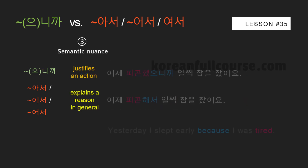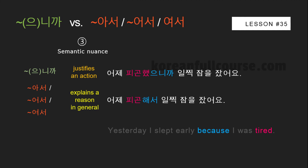Semantic nuance: '어제 피곤했으니까 일찍 잠을 잤어요' and '어제 피곤해서 일찍 잠을 잤어요' are both grammatically correct but used in different situations. The first justifies an action — for example, if someone asks 'Why didn't you answer my call?' you say '어제 피곤했으니까 일찍 잠을 잤어요.' But if someone asks 'What did you do yesterday?' — a general question — use 아서/어서/여서: '어제 피곤해서 일찍 잠을 잤어요.' There is no emotional undertone in this sentence.